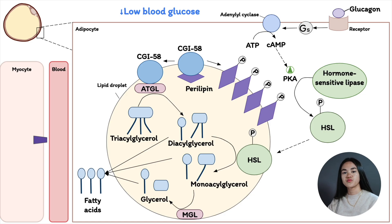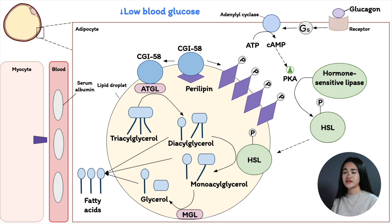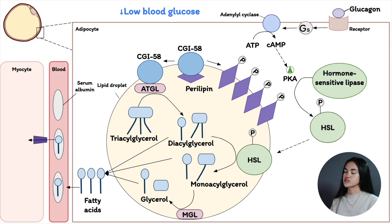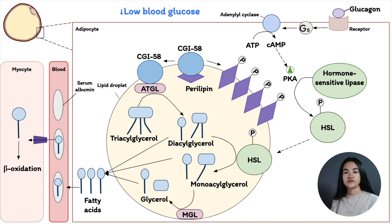In order for fatty acids to be transported in the blood, they need to bind to the blood protein serum albumin. The reason is that albumin is soluble and fatty acids are insoluble. So the fatty acids get on this 'boat' where they are transported to skeletal muscle, the heart, and renal cortex. When they get there, they enter the cell via plasma membrane transporters where they will be oxidized and broken down to yield energy.